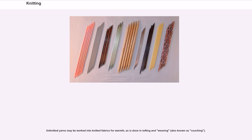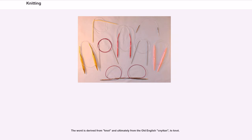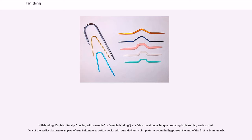The word 'knitting' is derived from 'knot' and ultimately from the Old English 'cnyttan,' to knot. Nålbinding — Danish for 'binding with a needle' or needle binding — is a fabric creation technique predating both knitting and crochet. One of the earliest known examples of true knitting was cotton socks with stranded knit color patterns found in Egypt from the end of the first millennium AD.